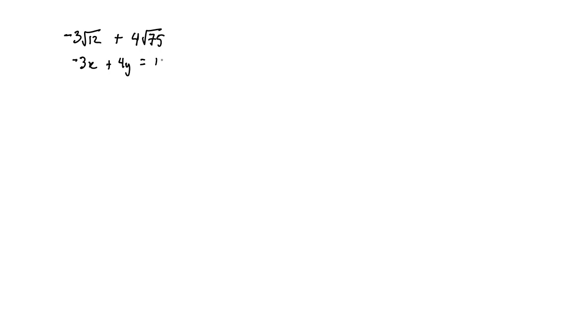In this video I'm going to go over radical operations — adding and subtracting radicals and multiplying and dividing radicals. Let's start with an example: negative 3 root 12 plus 4 root 75. We can't just add these directly. This is similar to how you can't add 3x plus 4y and get 1xy — we can only add like quantities.